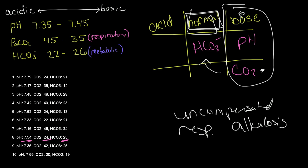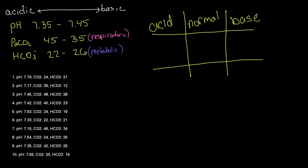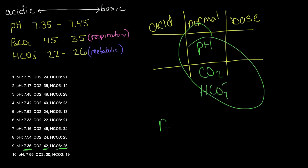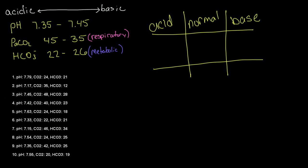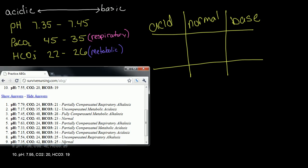Moving on to problem number nine: pH is 7.35, which is normal, so pH goes in the normal column. The CO2 is 42, which is also normal. And our bicarbonate, 25, is also normal. So this is another normal ABG reading. Let's double-check — number nine is normal. Normal. Correct.